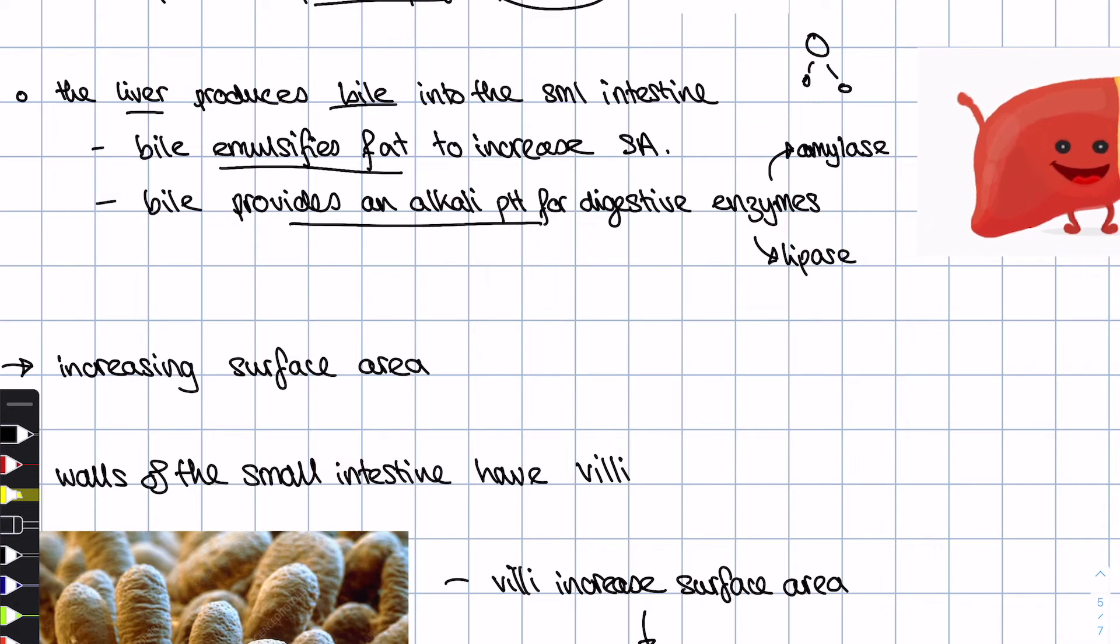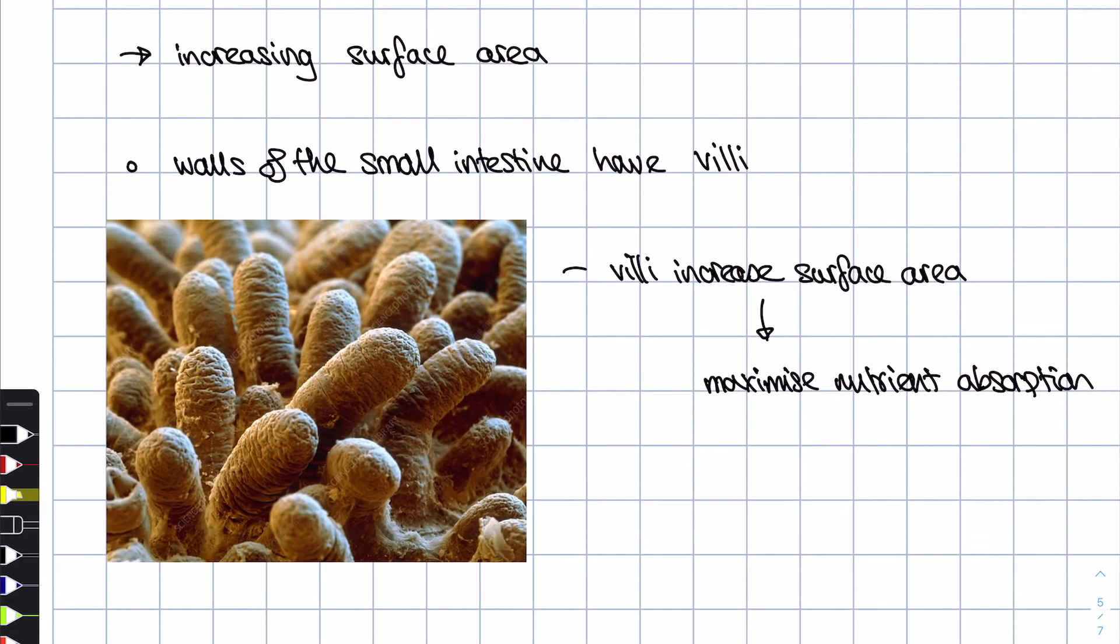The second thing that bile does is it also provides an alkali pH in the small intestine. You can imagine the food coming from the stomach enters into the small intestine. We've just said that the stomach has a very acidic pH condition, so if it comes into the small intestine where enzymes such as amylase, lipase, etc., need very alkali conditions. What bile does is it neutralizes all of the stuff from the stomach and gives the alkali pH which these enzymes need.